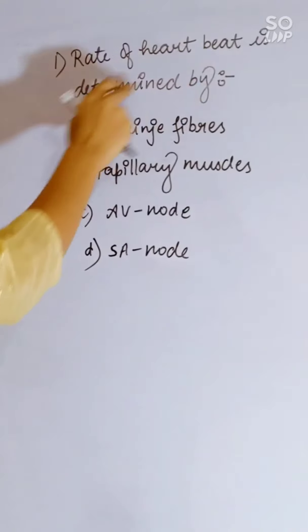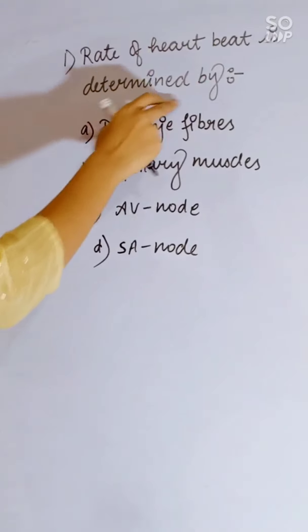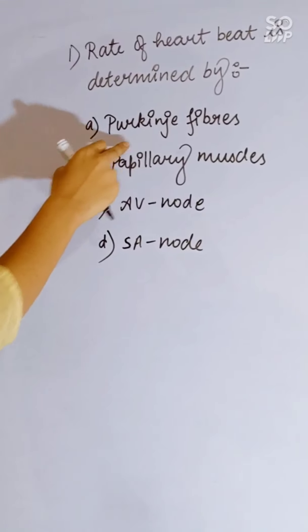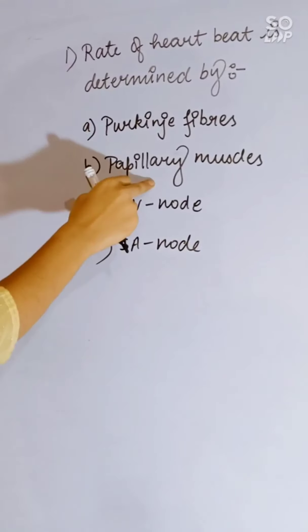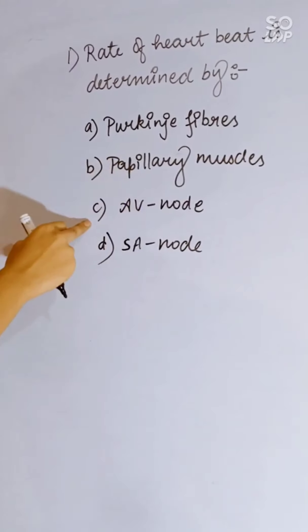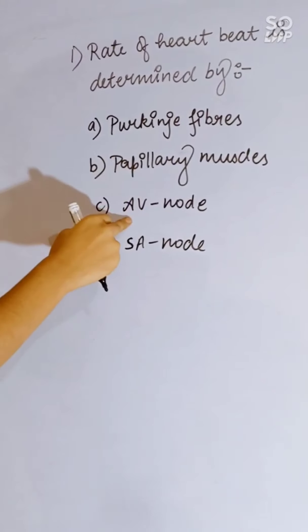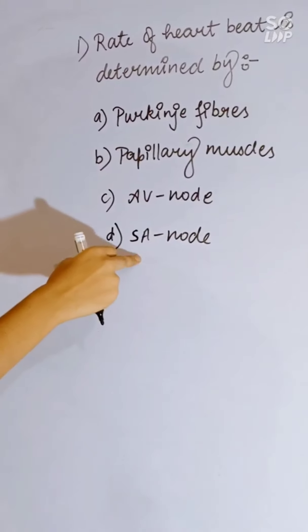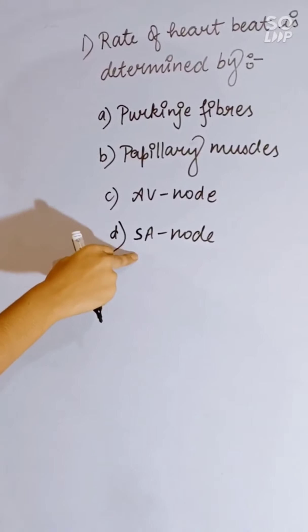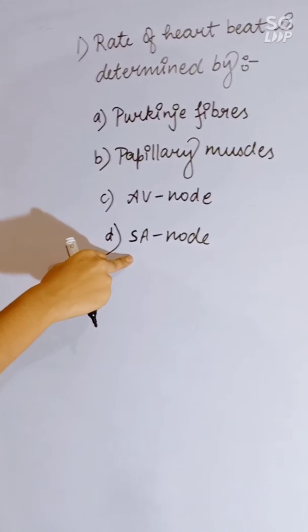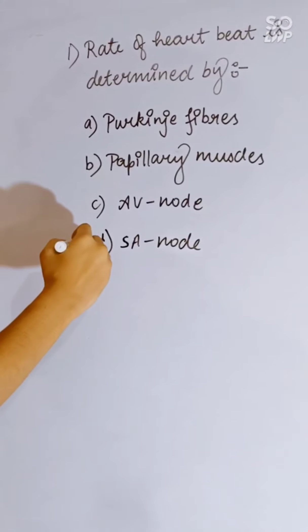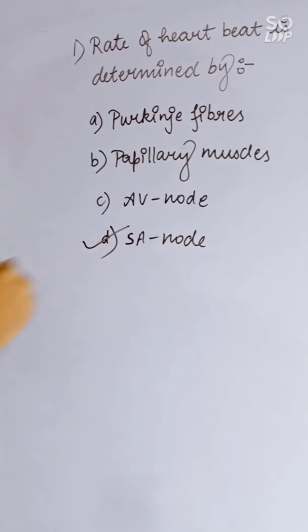The rate of heartbeat is determined by: Purkinje fibers, papillary muscle, AV node, or SA node. The SA node determines the rate of heartbeat. Correct answer is D.